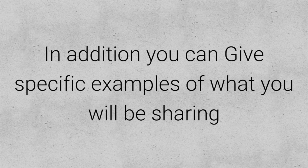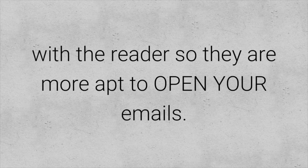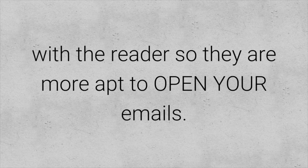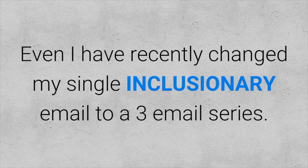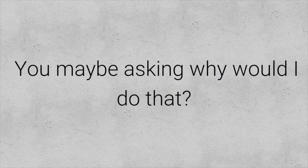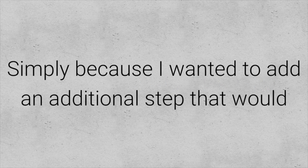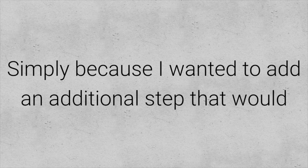You should tell them how often they'll be getting emails so they know what to expect. You can also give specific examples of what you'll be sharing so readers are more apt to open your emails. Give your reader either: A) what you promised via an offer, B) solution-based content, or C) a call to action. I've recently changed my single inclusionary email to a three-email series, simply because I wanted an additional step that would increase my open rates and build more rapport with my readers.